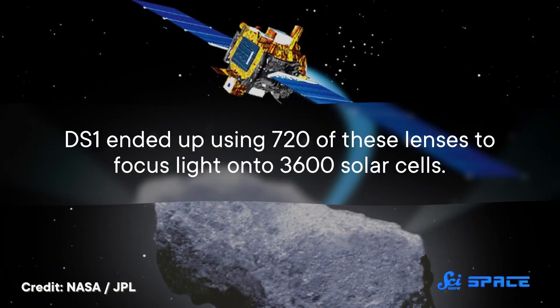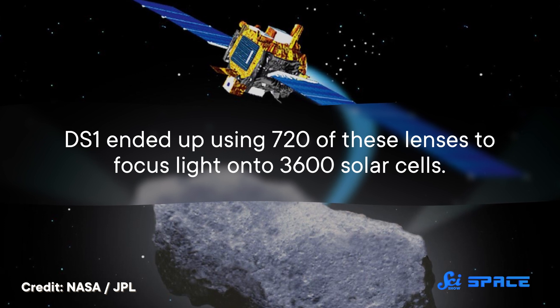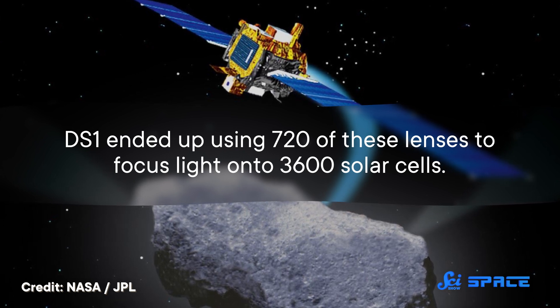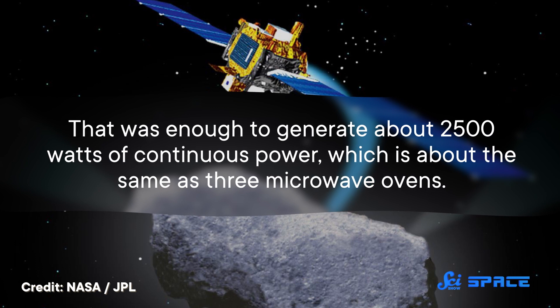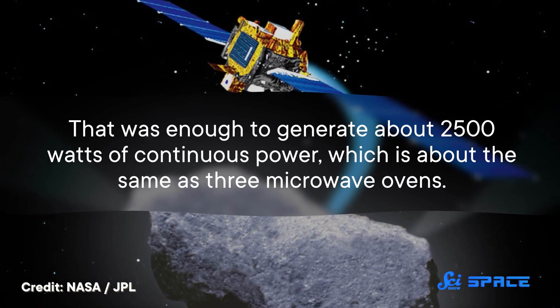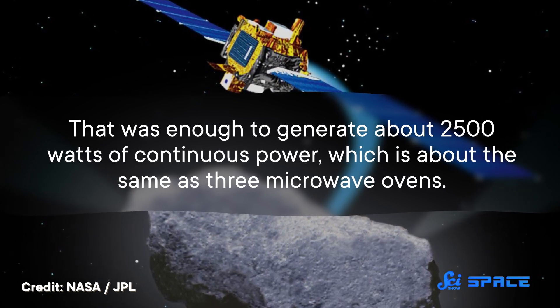NASA scientists made the already slimline lenses even more lightweight to reduce the cost of launching them into space. And they curved an extended sheet of Fresnel lenses so that even more light could be focused on a single point. DS-1 ended up using 720 of these lenses to focus light onto 3,600 solar cells. That was enough to generate about 2,500 watts of continuous power, which is about the same as three microwave ovens.